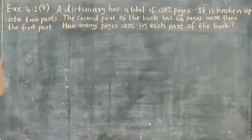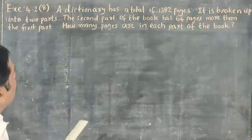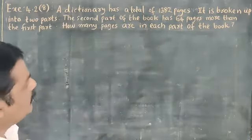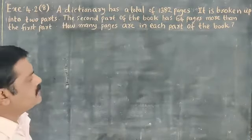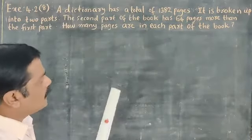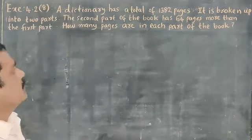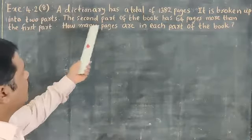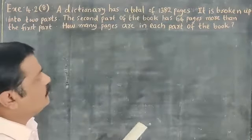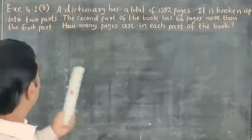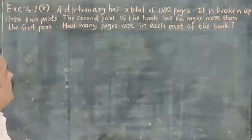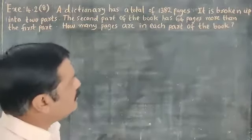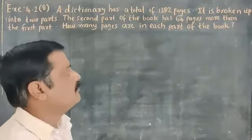Your question is: a dictionary has a total of 1382 pages. It is broken up into two parts. The second part of the book has 64 pages more than the first part. How many pages are in each part of the book?